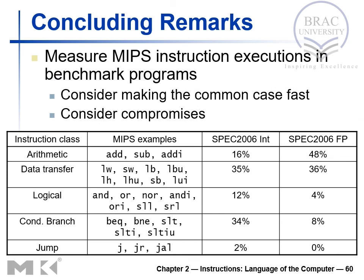This slide shows the frequency of MIPS instruction classes measured in benchmark programs. Arithmetic instructions account for 16% in integer benchmarks and 48% in floating-point benchmarks. Logical instructions are 12% for integer and 4% for floating point. Jump-type instructions are 2% in integer benchmarks and 0% in floating-point benchmarks.